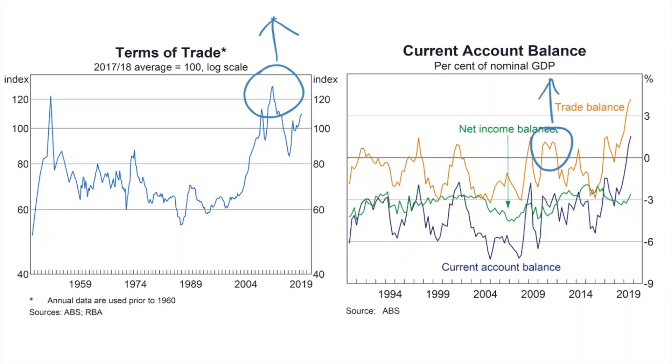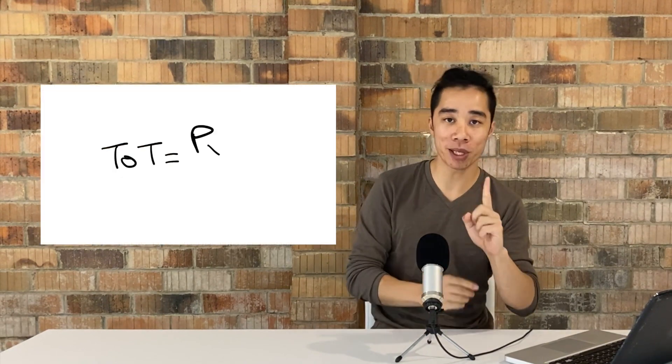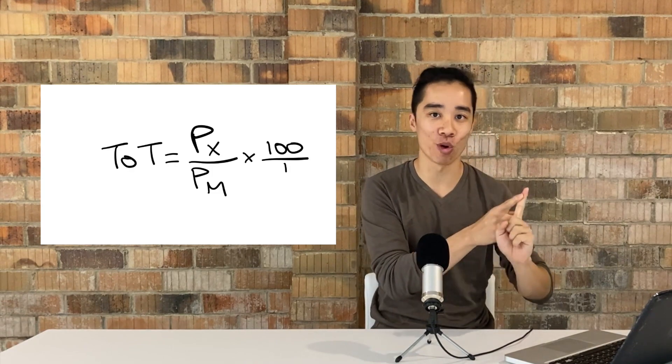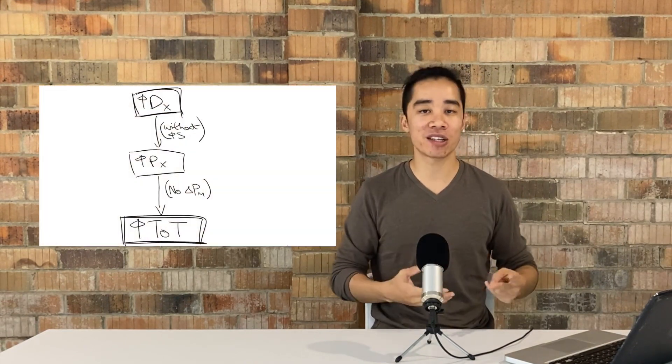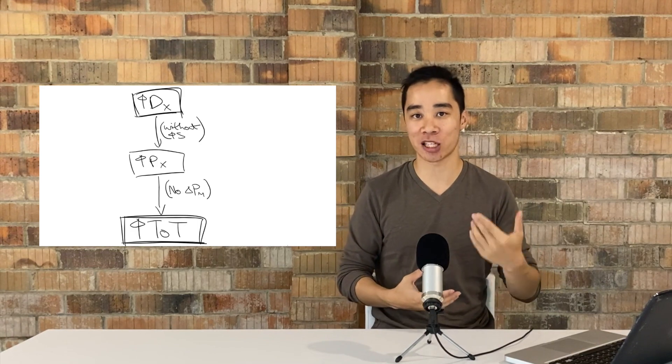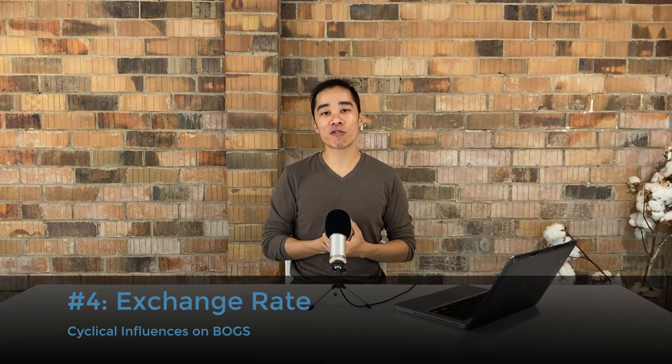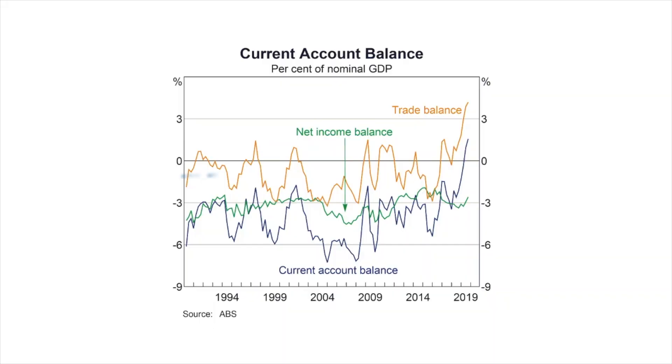A low terms of trade is often seen with a worsened BOGS deficit. To simplify terms of trade, just remember two things: one, the formula — export price index over import price index — and two, that it's an indicator for demand for exports in Australia. One more very important cyclical influence on BOGS is the exchange rate, but because of its complexity I want to devote a whole video to it — look out for that in the description or the comments below. Those cyclical influences would explain the main fluctuations in BOGS.